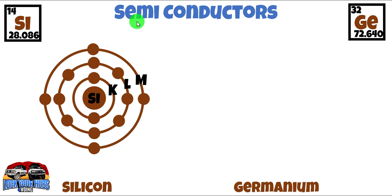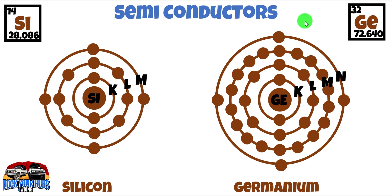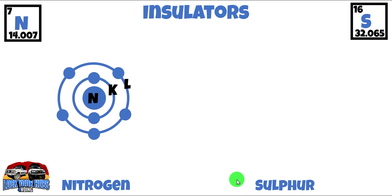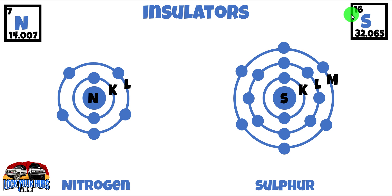Now semiconductors. Two I've chosen are silicon and germanium, common in things like transistors and integrated circuits. Silicon has atomic number 14, and that leaves us with four electrons in its valence shell. Germanium has an atomic number of 32, and again that leaves us with four electrons in that outermost valence shell. By now you're probably seeing a bit of a pattern. Let's move on to insulators: nitrogen and sulfur, both commonly used in the manufacturing of electronic components. Nitrogen has atomic number 7, leaving five electrons in the outermost valence shell; sulfur has atomic number 16, leaving six electrons. So the more electrically conductive an element is, the fewer electrons in the valence shell, and the better the insulator, the more electrons in the outermost valence shell.